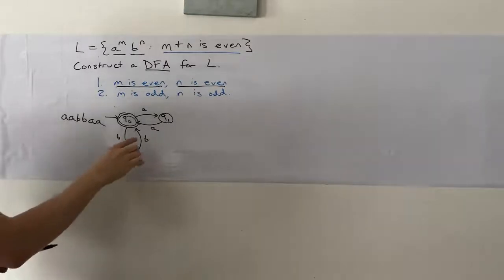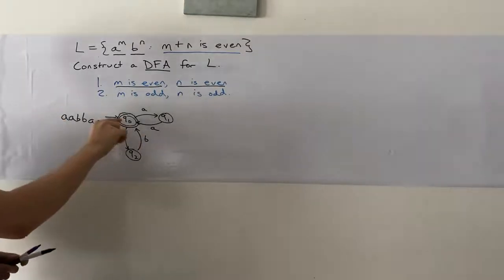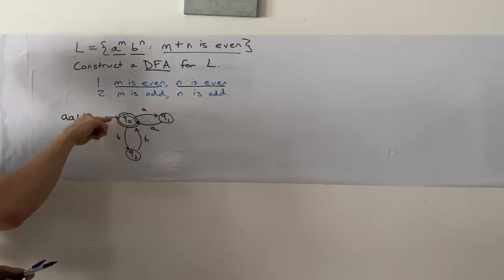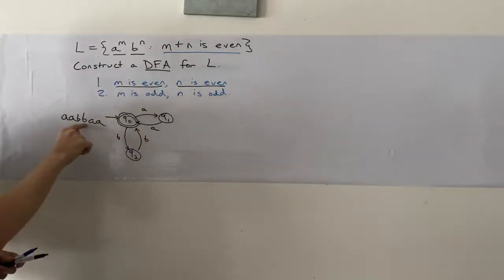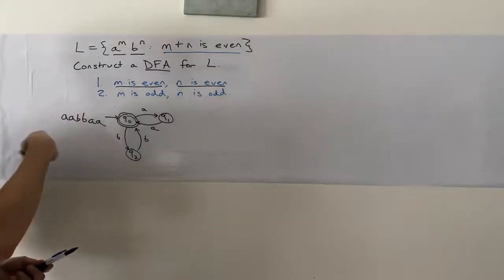Well, that means that we need to not come back to Q0, because if we come back to Q0, then we can have this behavior of A's being read after B's.